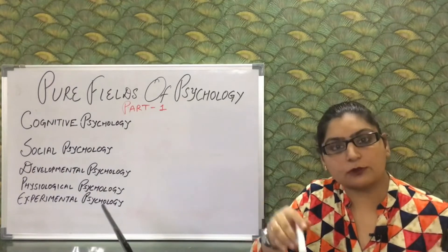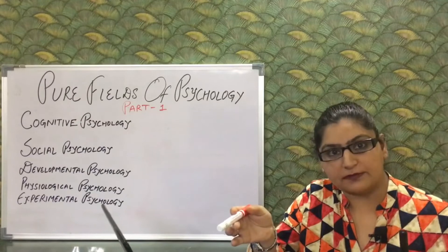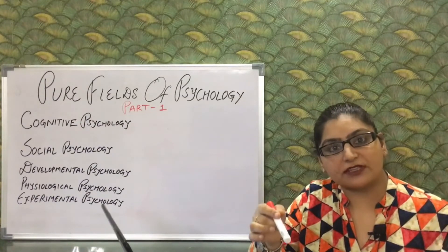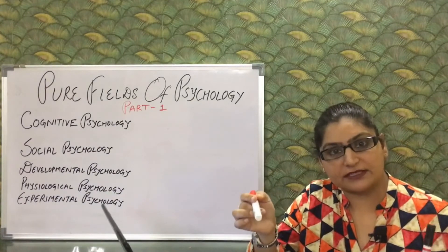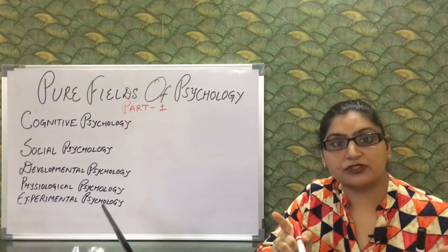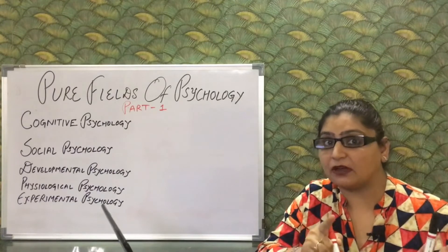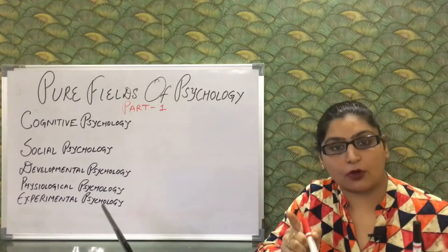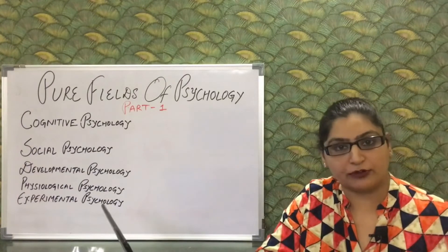Cognitive psychology also handles attention problems and memory-related problems such as Alzheimer's or dementia. They also discover new ways of increasing memory and improving decision-making accuracy. This is a very important field because cognitive distortions, when they occur in life, can create havoc in multiple areas of an individual's life.